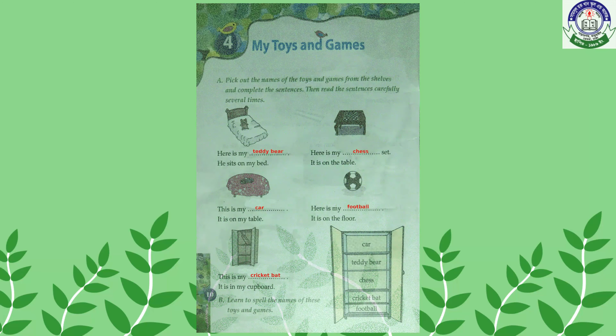Then the next unit — Unit 4: My Toys and Games. Number A: pick out the names of the toys and games from the shelves and complete the sentence. Then read the sentence carefully several times.